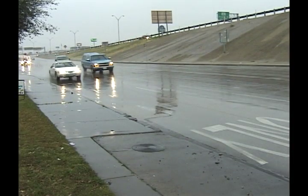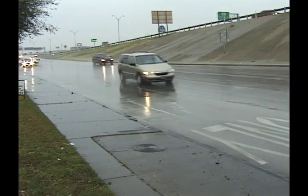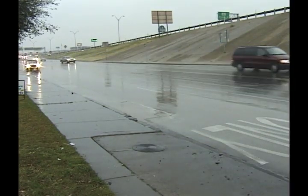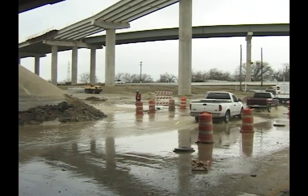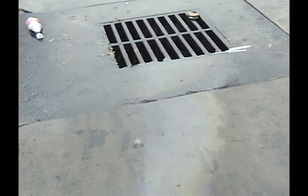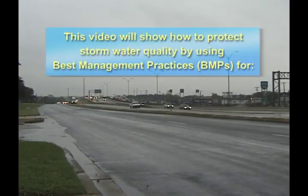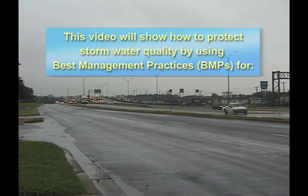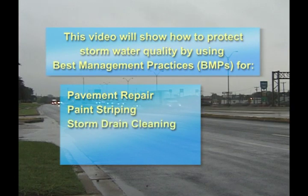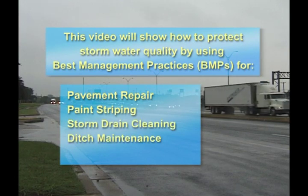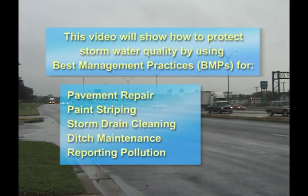Various activities associated with the maintenance of streets and drainage facilities may result in stormwater pollution if not conducted properly. Employees who maintain and repair our streets and drainage infrastructures can help reduce water pollution by following precautions in their daily activities. This video will show how to protect stormwater quality by using best management practices for pavement repair, paint striping, storm drain inlet cleaning, ditch maintenance, and reporting pollution and illegal dumping.